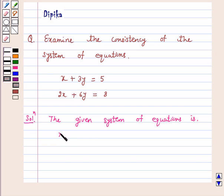x plus 3y is equal to 5 and 2x plus 6y is equal to 8.